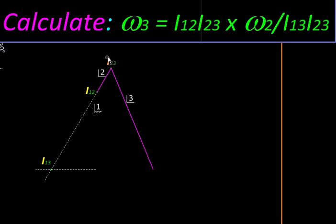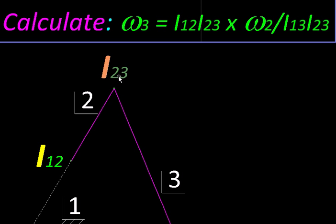First we take this point i23 which is common to link 2 and 3. Treat it as a part of link 2 and find its linear velocity by r the length of link 2 into omega of 2. That is the numerator of this expression.